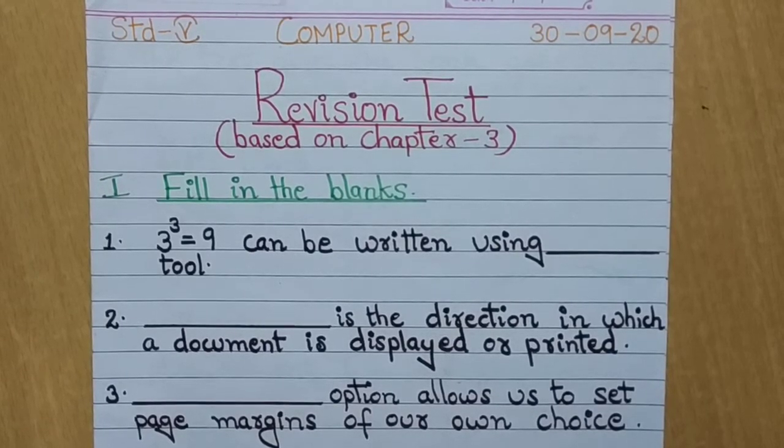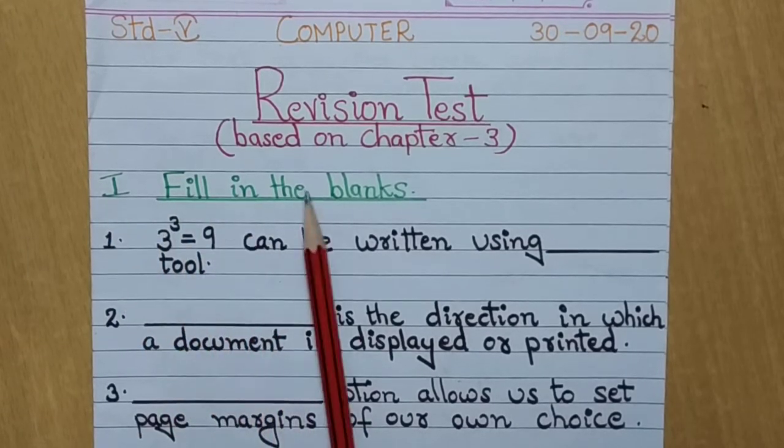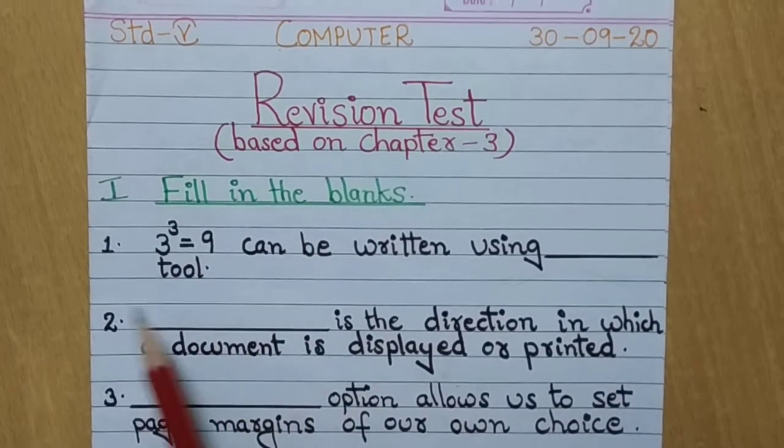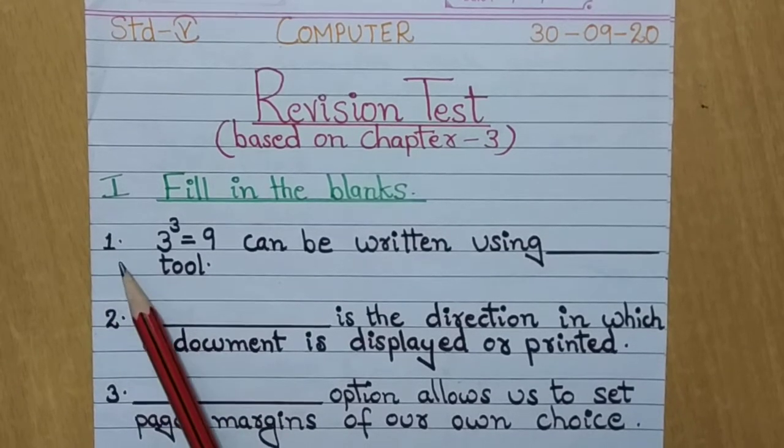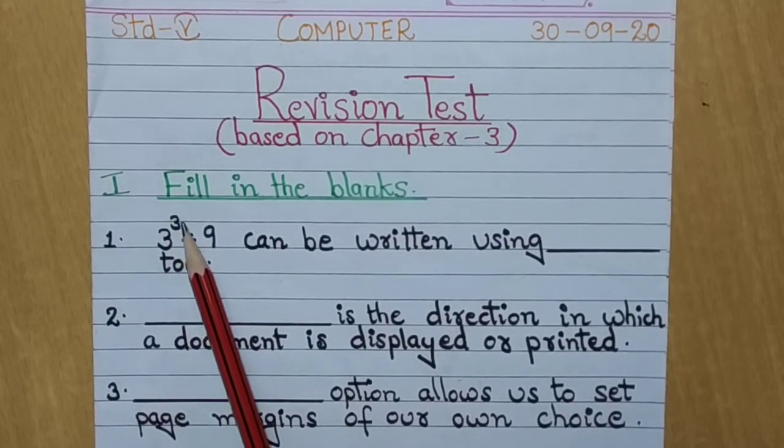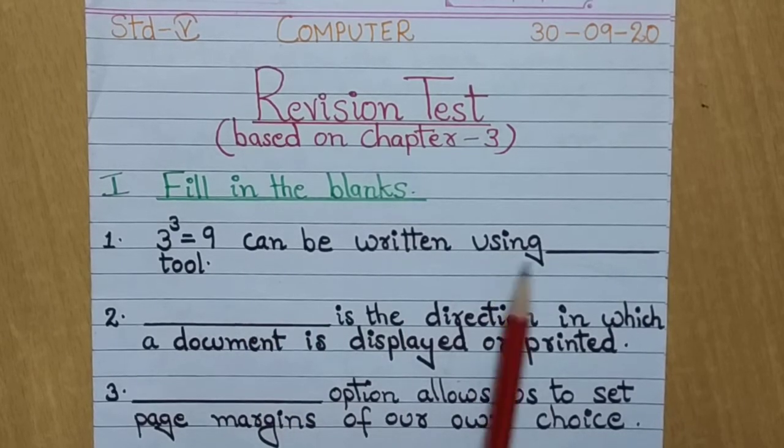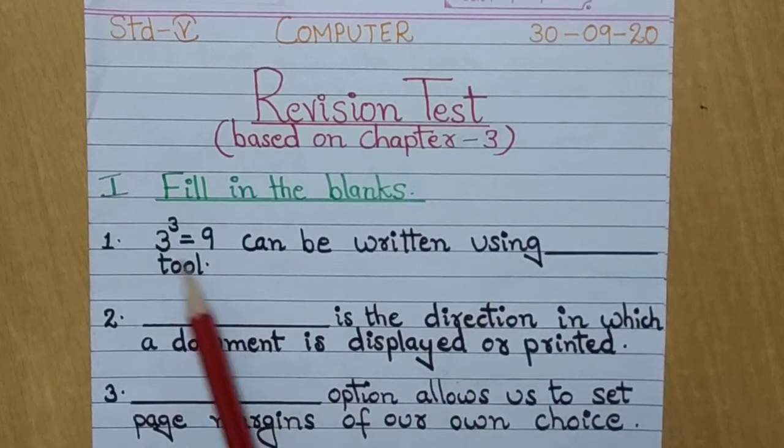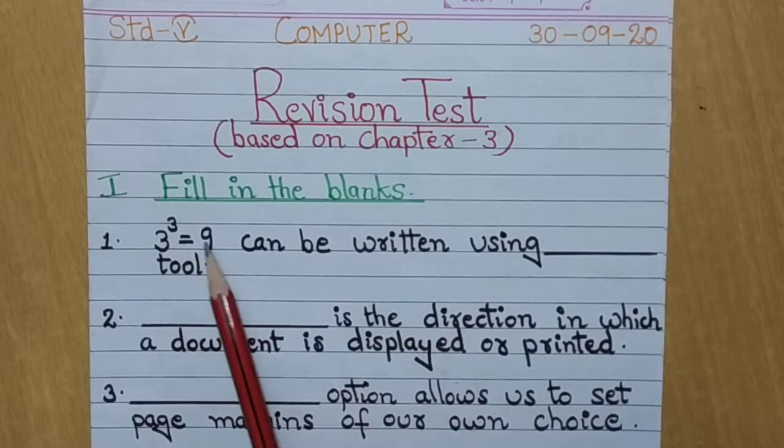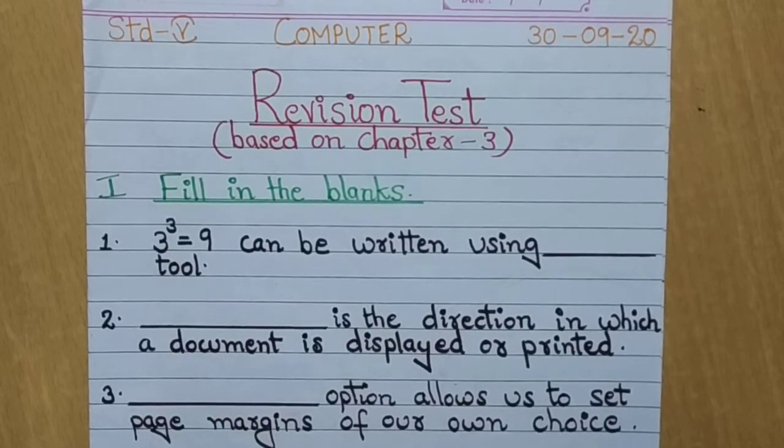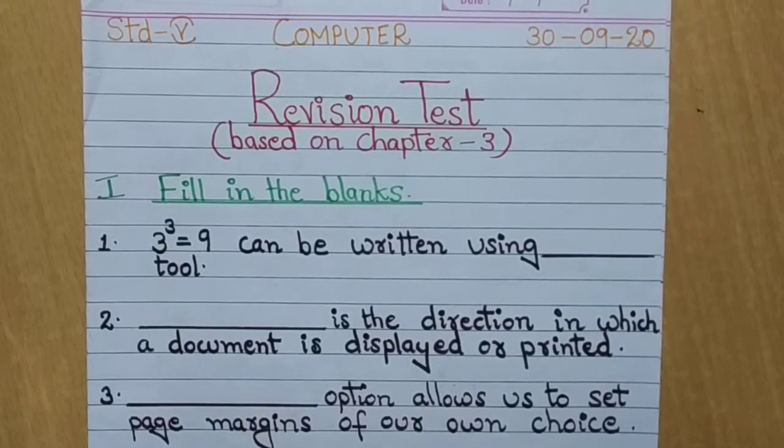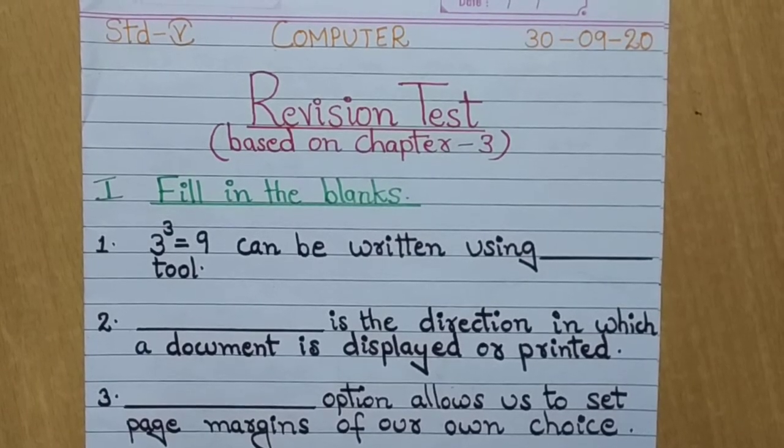So let's start. Now fill in the blanks. The first one is 3 raised to 3 equals to 9 can be written using dash tool. Jo 3 raise to 3 hai equals to 9 ye kis tool se hum log is tarike se is form mein likh sakte hain. How we can write that?